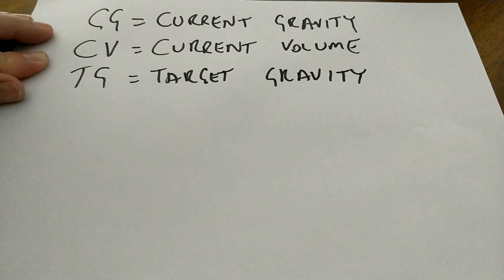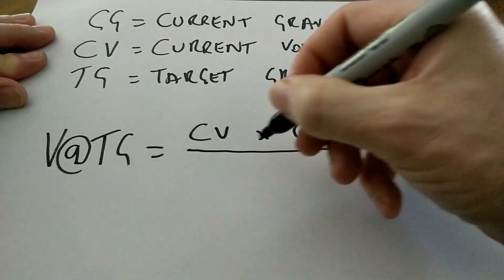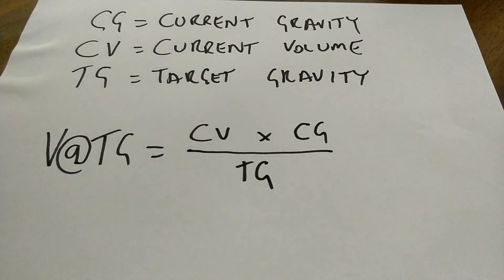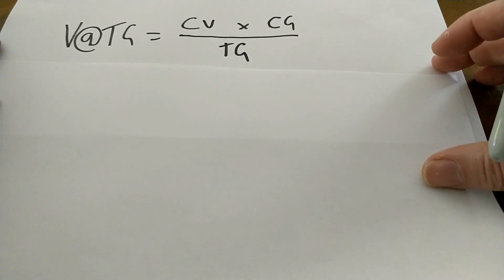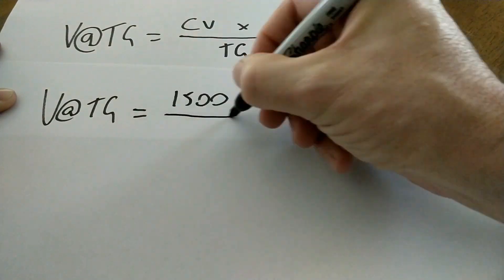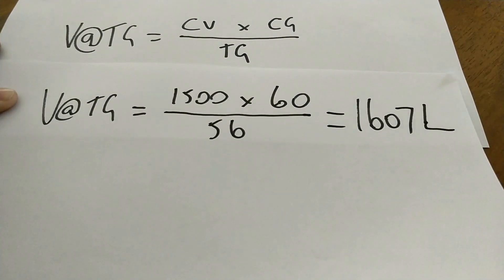But how much do we need to dilute it with? That's easy. The volume at target gravity equals the current volume times the current gravity divided by your target gravity. In this particular case: 1,500 litres at 1060, in order to take it down to 1056, is 1,500 × 60 ÷ 56 = 1,607 litres once we get to the end of the boil.